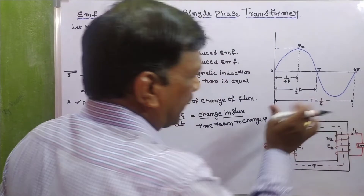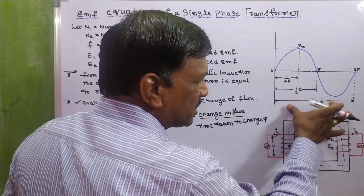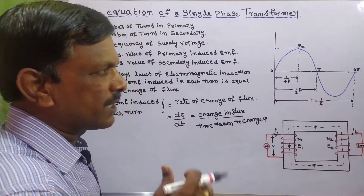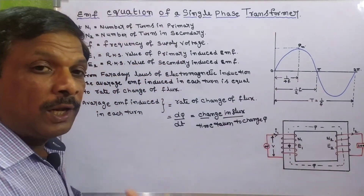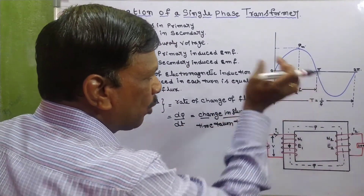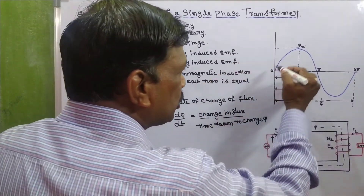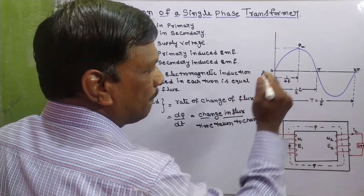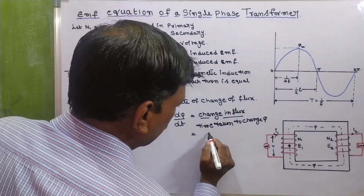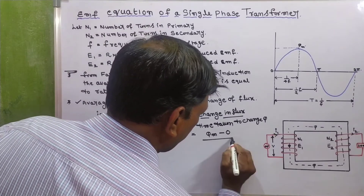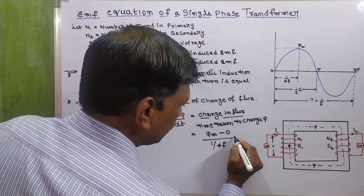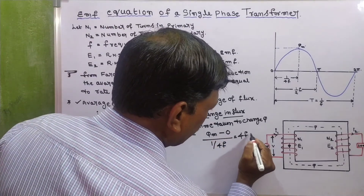Looking at the diagram, the time taken to complete one cycle is 1/F seconds. The time taken to complete a half cycle is 1/2F seconds, and the time taken to complete a quarter cycle is 1/4F seconds. So dt equals 1/4F. In a quarter cycle, flux varies from 0 to φ_maximum. So dφ/dt equals φ_max minus 0, divided by 1/4F, which equals 4Fφ_max.